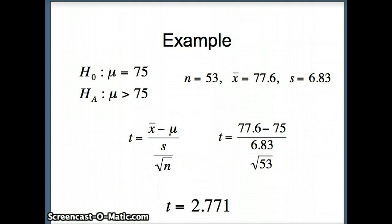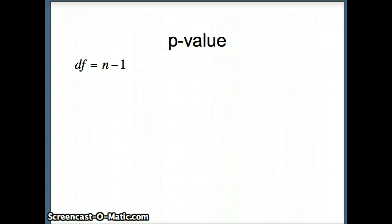Our next step is to determine just how extreme this value is. Is it reasonable for us to get a 2.771, or does that indicate this data set was very extreme, assuming that μ is 75? To do that, we are going to find our p-value. The degrees of freedom for our p-value will be n minus 1. So in this case, our degrees of freedom is 53 minus 1, or 52. We are looking at a t distribution with 52 degrees of freedom.